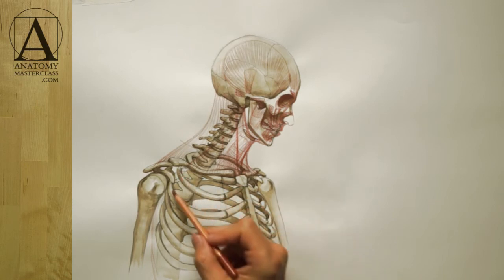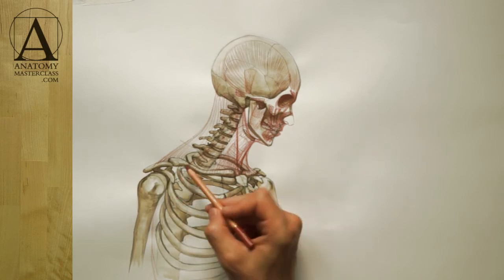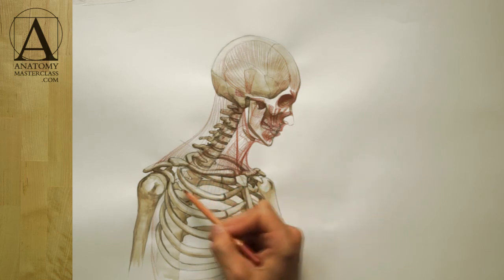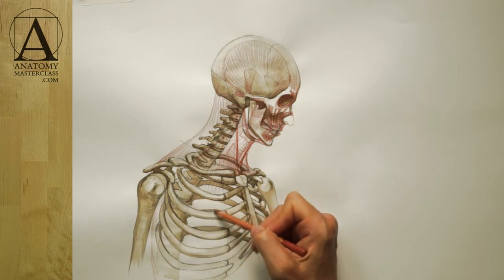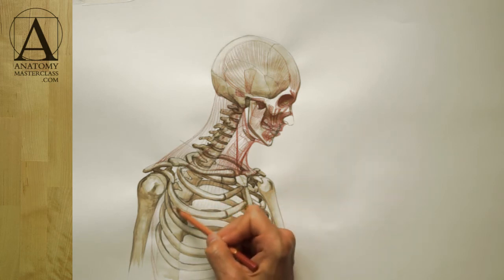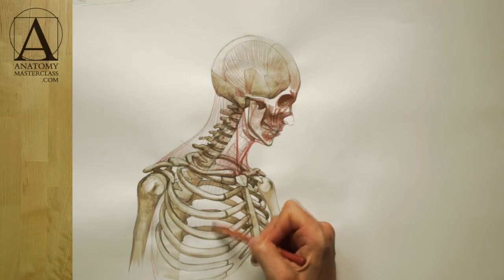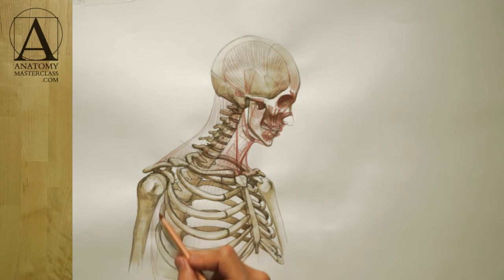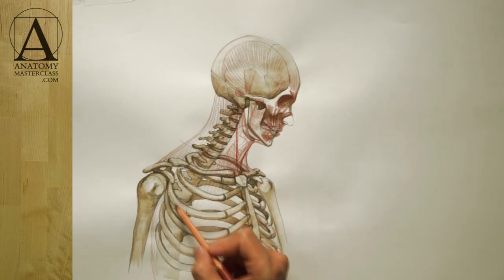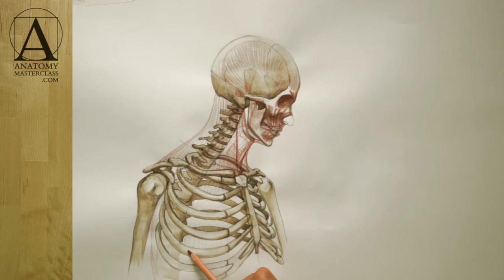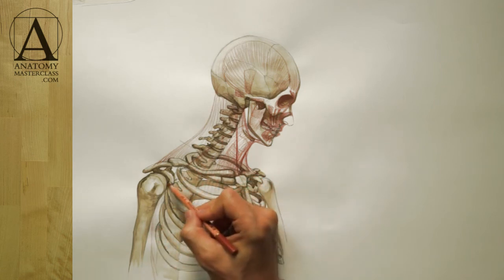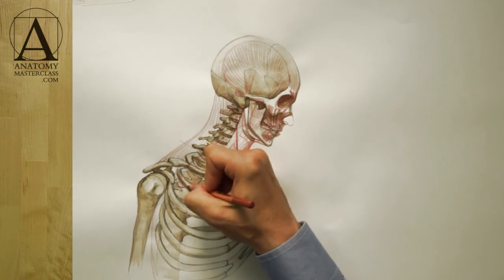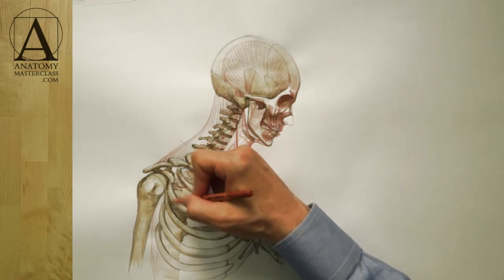There is a muscle that connects the ribs between each other. On the side of the torso, there is a muscle that has eight or nine digitations starting from the side parts of the rib and inserting into the inner border of the shoulder blade. The main function of this muscle is to move the shoulder blade.